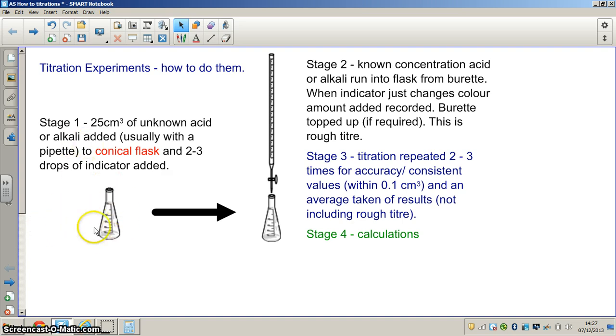Once we've got the acid or alkali in here we usually add 2 or 3 drops of an indicator. And then we set the conical flask up underneath a burette.